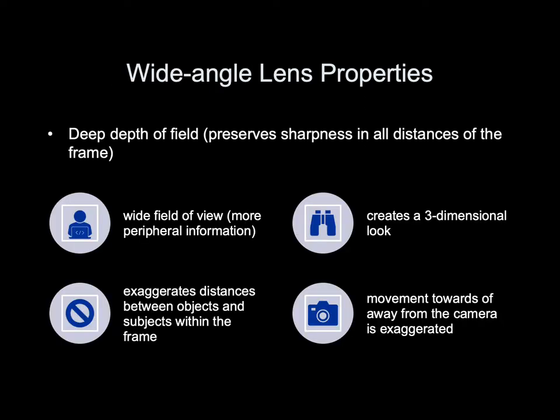Wide-angle lens properties: a wide-angle lens creates a deep depth of field, preserving sharpness at all distances within the frame. It creates a wide field of view with more peripheral space on the sides of the frame. It also creates a three-dimensional look by exaggerating the distances between objects and subjects, and movement towards or away from the camera is exaggerated.